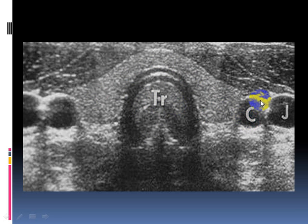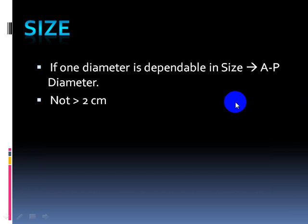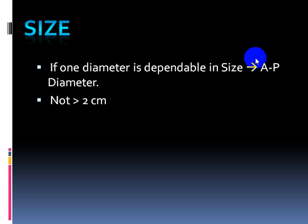The first topic to be assessed in thyroid ultrasound is the size. We judge the size of the thyroid — if it's enlarged — by three dimensions, assessing the anterior-posterior, anterior, and side-to-side diameters. The most important diameter to assess is the anterior-posterior diameter. If I assess it and it is more than two centimeters, I can say the thyroid is enlarged.